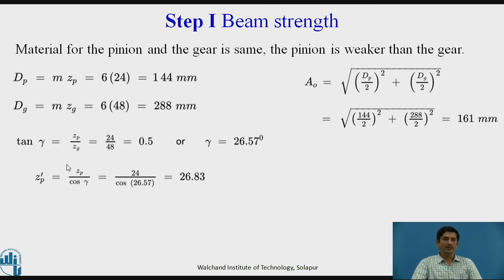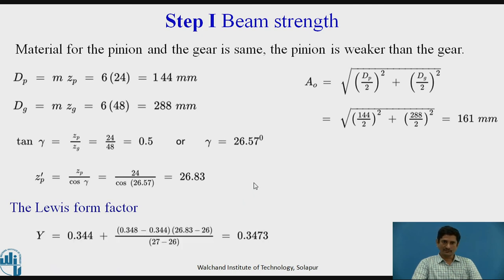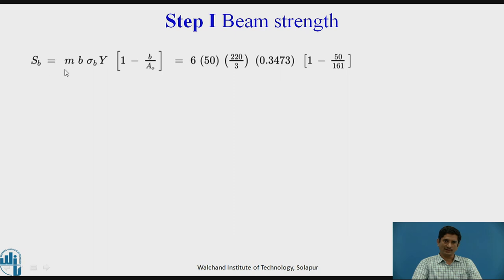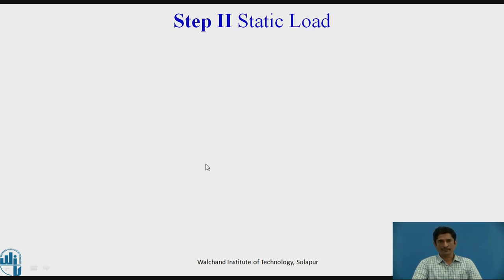We obtain gamma in order to calculate the virtual number of teeth on the pinion: Zp' = Zp / cos(gamma) = 24 / cos(26.57°) = 26.83. With this data we calculate the Lewis form factor: from the standard table, y = 0.3473. Using m = 6, b = 50, sigma_b = SUT/3, y = 0.3473, and bevel factor (1 - b/A₀), the beam strength comes out to be Sb = 5267.74 N.